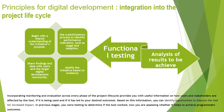There are guidelines to follow for integrating principles into the project lifecycle. Begin with a shared understanding of the initiative's purpose — why are you developing this digital solution? Use a participatory process to identify performance indicators such as usage and adoption. Participatory processes include focus discussion groups, observation, interviews, and testing systems. When people participate, ownership is easier — they feel that they're part of it — and that helps you identify those performance indicators like usage and adoption.